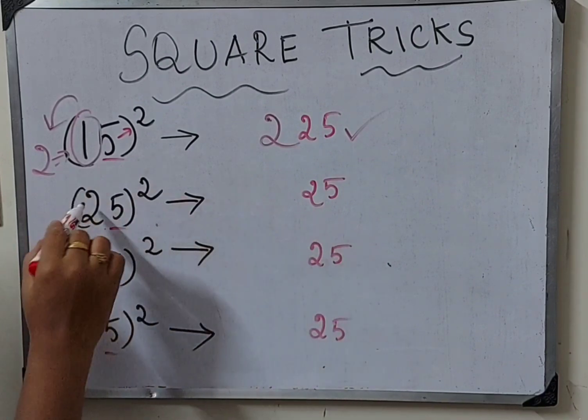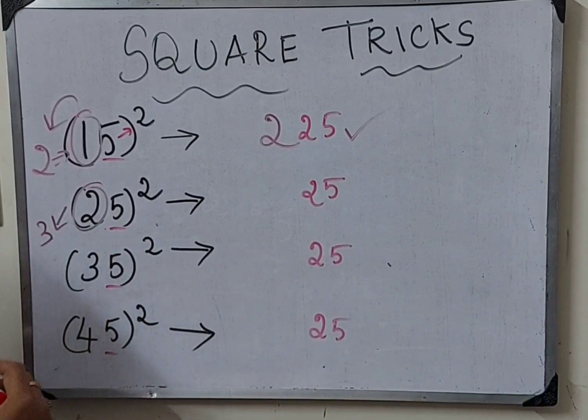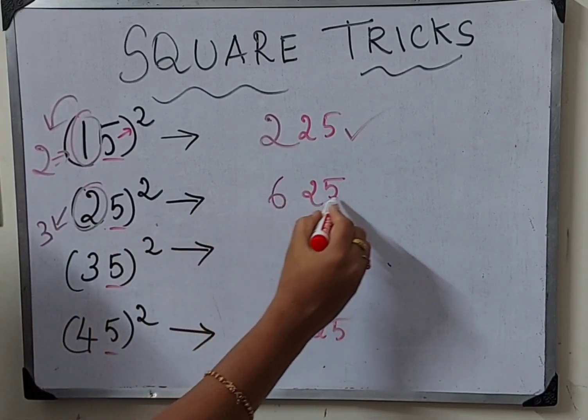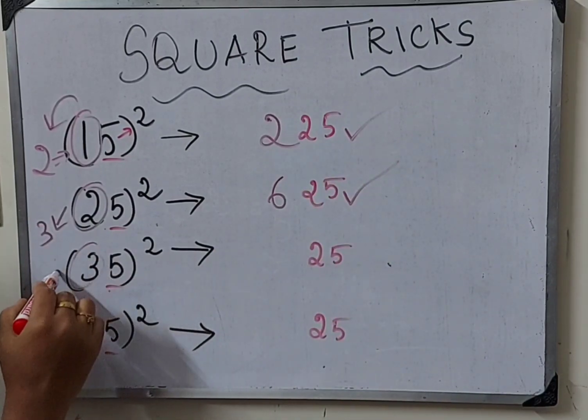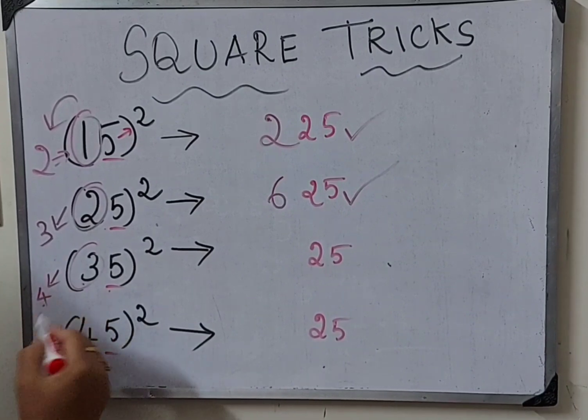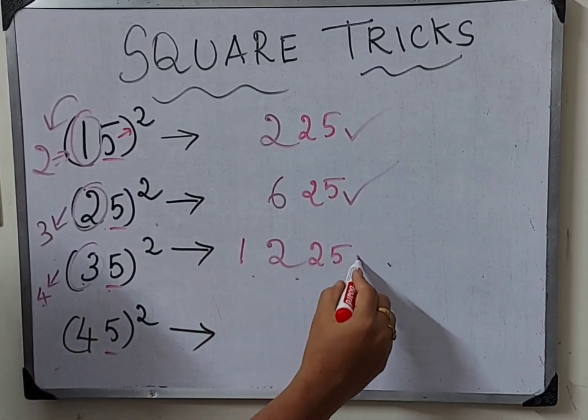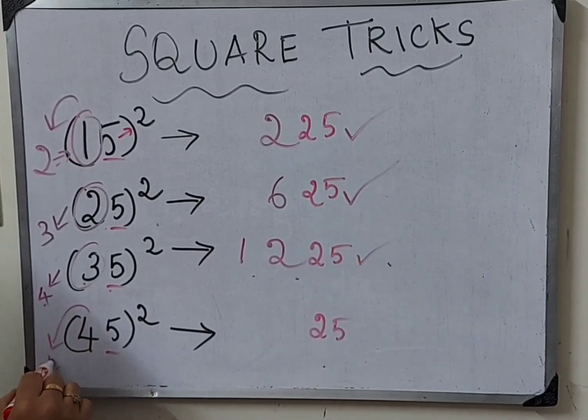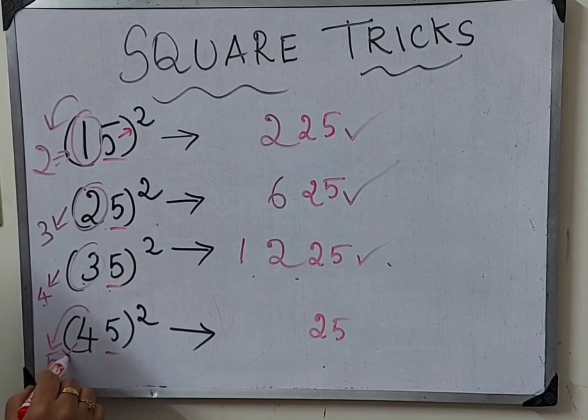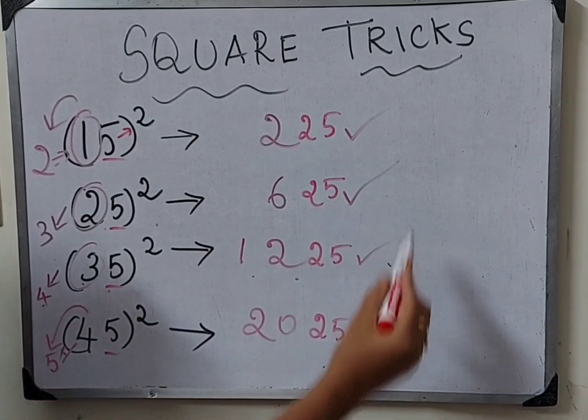Now follow the same steps. For 25 square, 5 square is already there, 2 remains, so after 2 is 3, 3 twos are 6, so 25 square is 625. Next 35 square, 5 is already over, remaining is 3, so 4 times 3 is 12, so 1225. For 45 square, 5 is done, after 4 is 5, so 5 fours are 20, so 45 square is 2025.